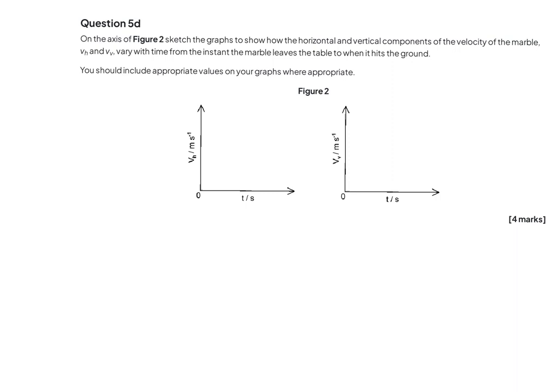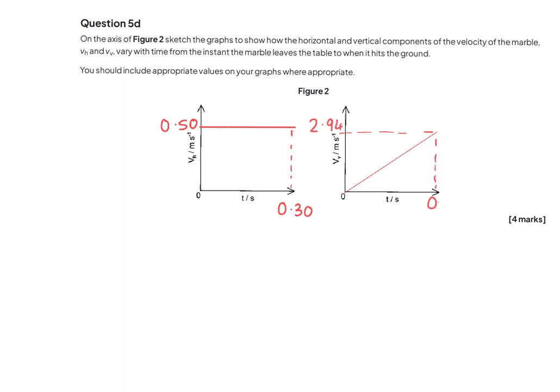Question 5d: sketch the graph showing the horizontal and vertical components of velocity as the marble falls. The horizontal component stays constant — ignoring air resistance, it is a straight horizontal line at 0.50 ms⁻¹ up to t equals 0.30 seconds. The vertical component accelerates at a constant rate due to gravity, so draw a straight line with constant positive gradient, reaching a maximum of 2.94 ms⁻¹ at t equals 0.30 seconds, labelled correctly.